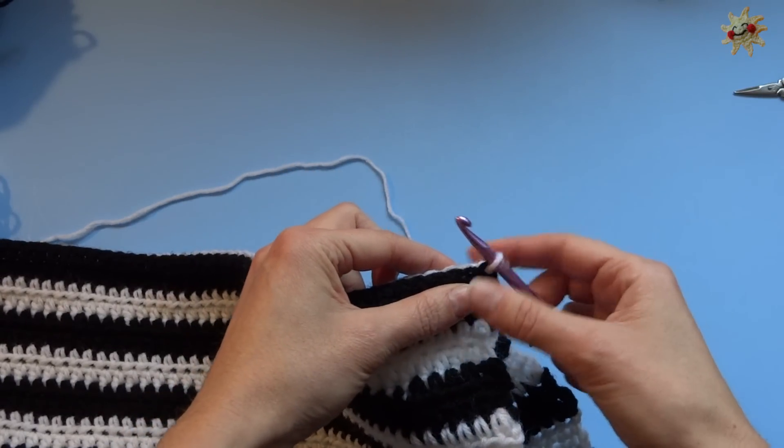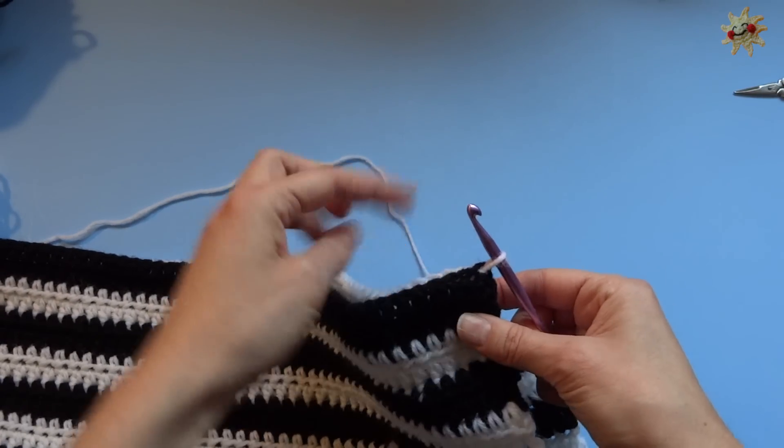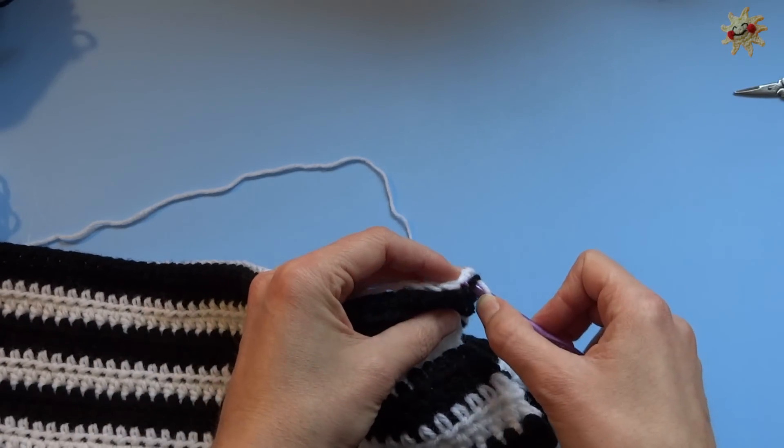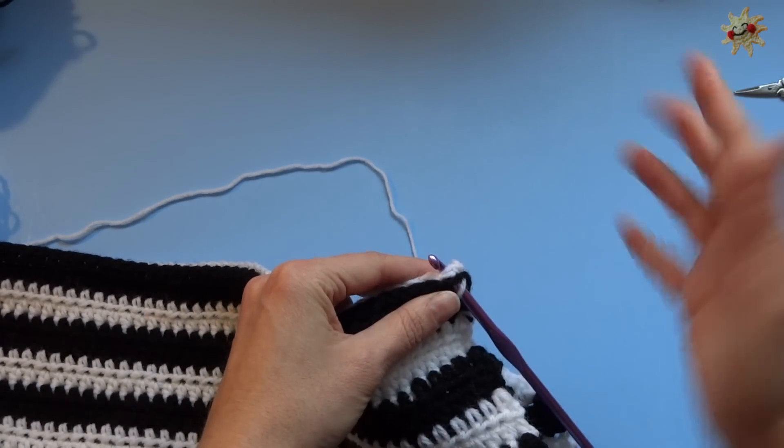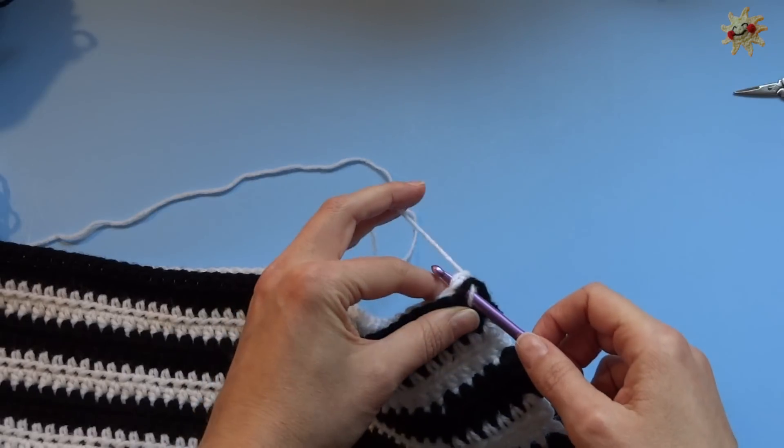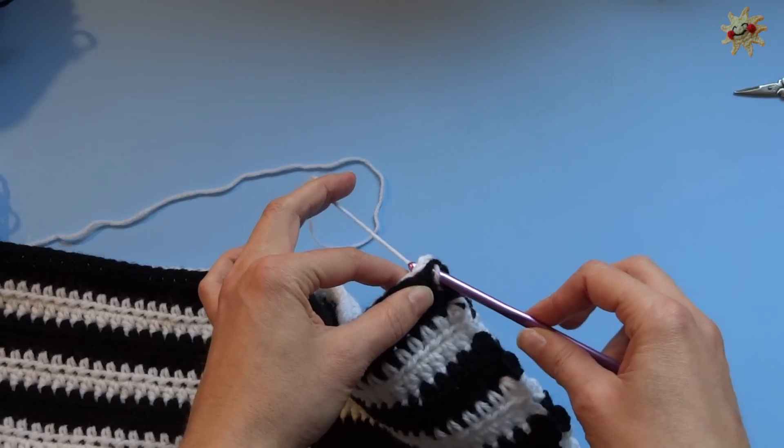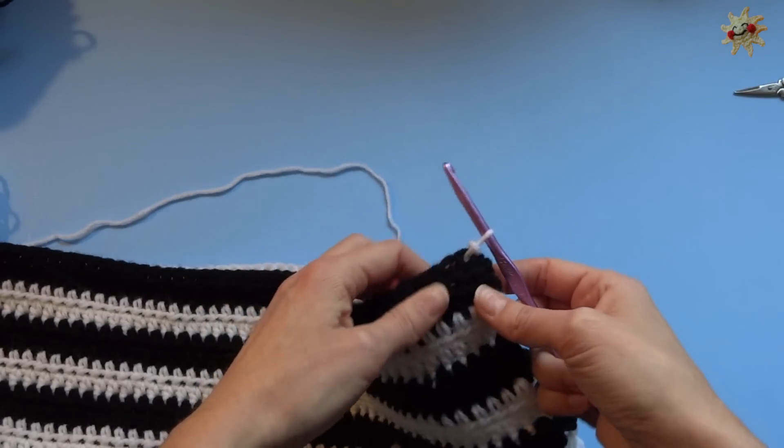Now you can single crochet this together if you like. You can even just whip stitch it together if you like. But I always find that it's quickest to slip stitch the whole thing together. And as you know, slip stitch is just you put your hook through your work. Wrap your yarn and pull it back through everything.